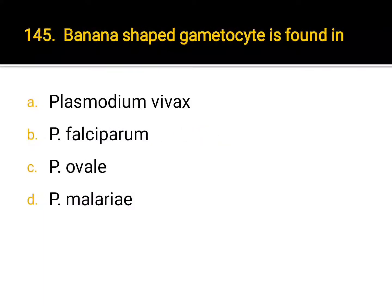Banana-shaped gametocyte is found in: A. Plasmodium vivax, B. Plasmodium falciparum, C. P. ovale, D. P. malariae. Correct answer: B. Plasmodium falciparum.